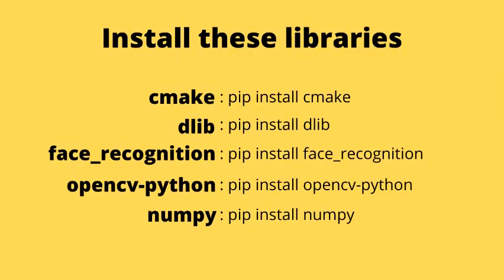Before running the Python program, you have to install these Python libraries on your system. Only dlib can take around 10 to 15 minutes to install. So don't be surprised — it's normal.